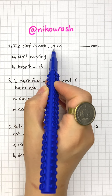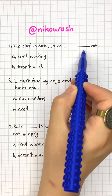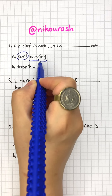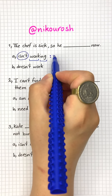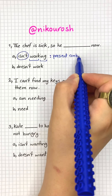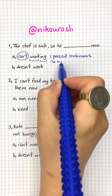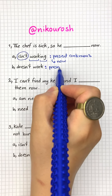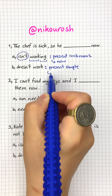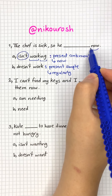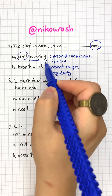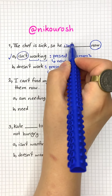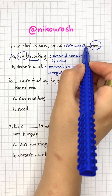The chef is sick so he blank now — isn't working or doesn't work? Isn't working is a present continuous tense, which we use to talk about something happening right now. Doesn't work is a present simple tense, used for something we do regularly. Because we have 'now' at the end of the sentence, we should use the present continuous tense, so the right answer is isn't working.